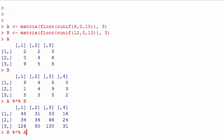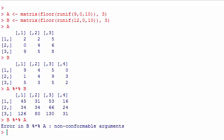If I try to do B times A that should not be allowed because B has 4 columns and A has 3 rows. So that shouldn't be allowed. And R tells us that the product cannot be computed.